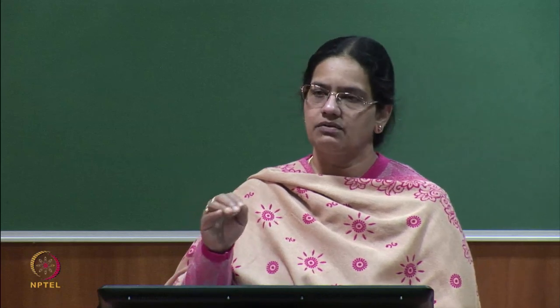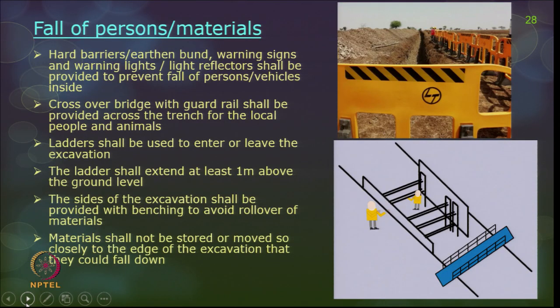While working on a site with underground electrical cables, adequate precautions should also be taken. Other hazards include fall hazards — here, falls happen from ground level down into the excavated depth. It can be fall of person, fall of material, or fall of equipment. IS codes provide guidelines to prevent these: hard barriers, earthen bunds, warning signs, and warning lights shall be provided. A crossover bridge with guard rails shall be provided across the trench for local people and animals. Ladders shall be used to enter or leave the excavation and must extend 1 meter above the ground level.